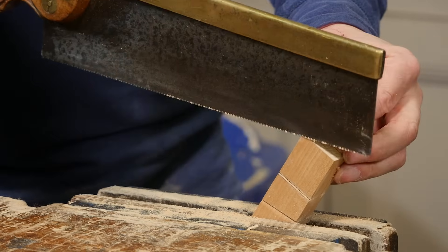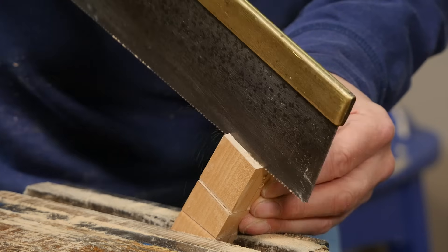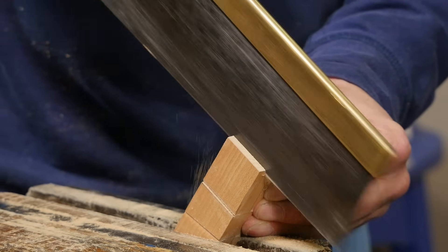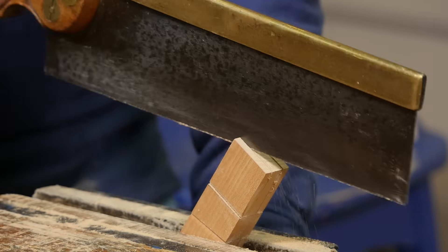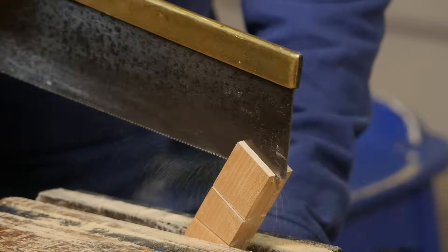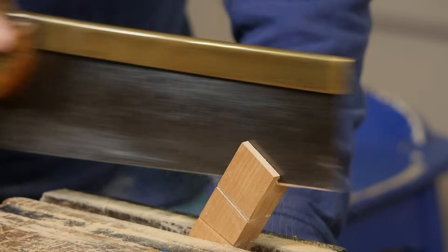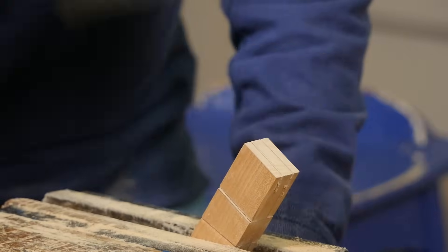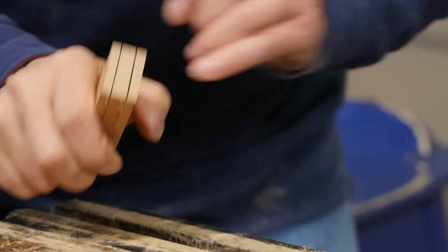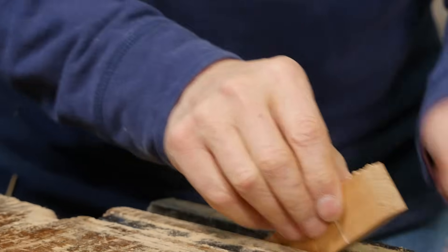Go across the top first. The end grain is a little bit trickier, and then just follow the line close to it. You can see I think I've got the two lines, two lines still visible. Flip around, come from this side now.